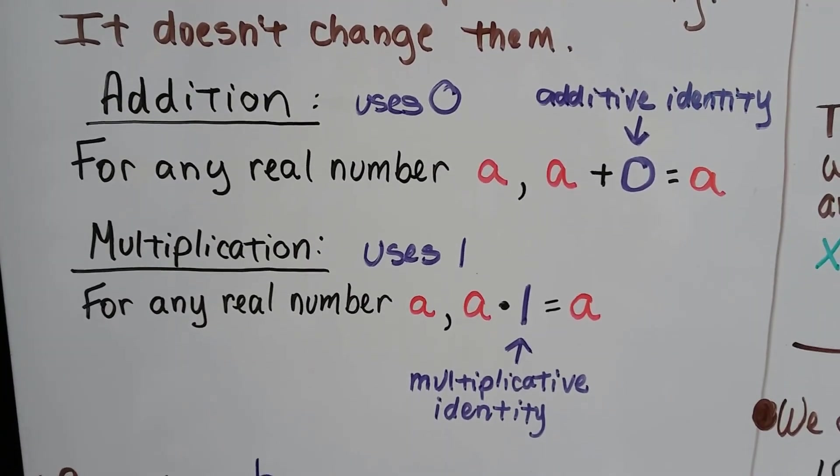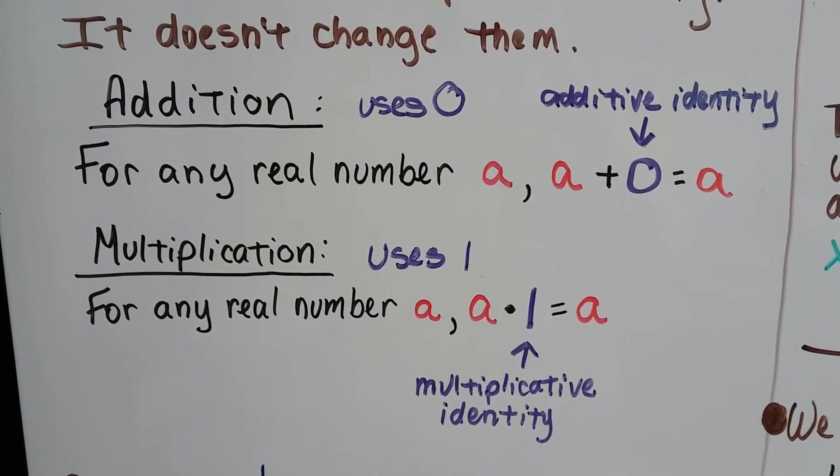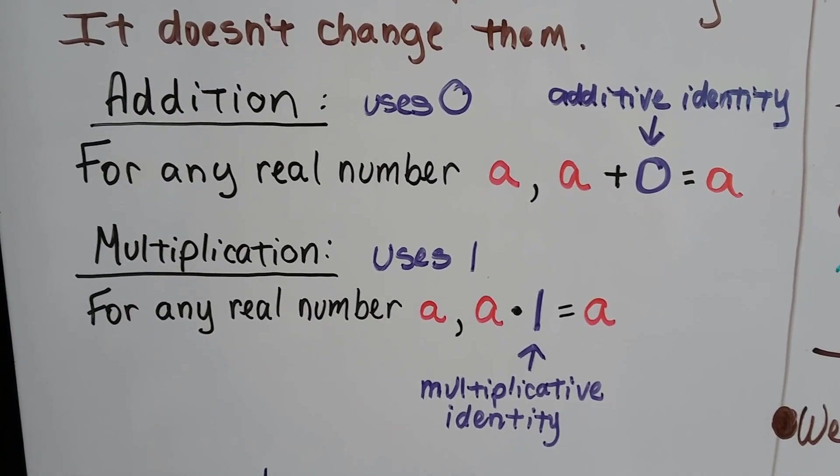For addition, which uses 0, for any real number a, a plus 0 is a. The a keeps its identity, and that 0 is the additive identity.